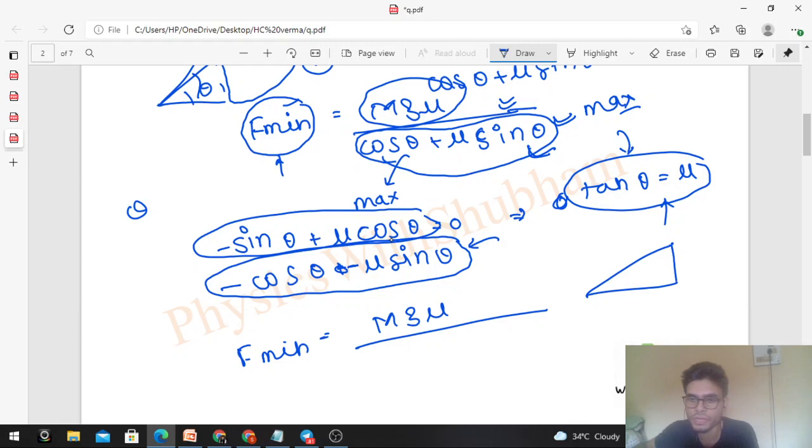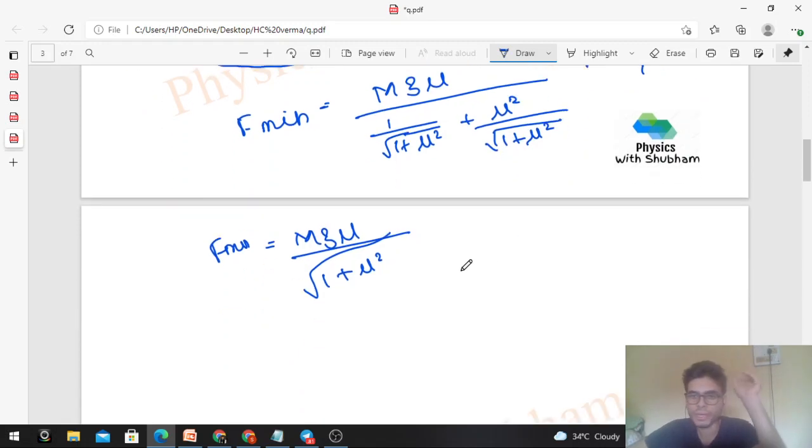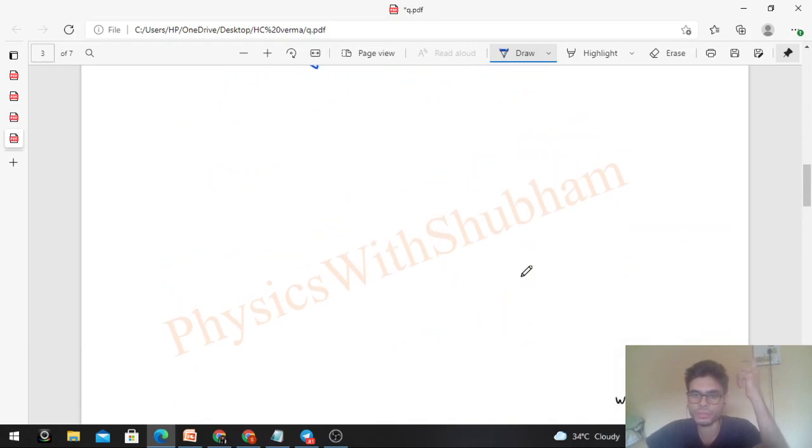So your θ is in terms of μ. Because we know the value of tan θ, which is μ upon 1, the hypotenuse is √(1 + μ²). So cos θ will be 1/√(1 + μ²) and sin θ is μ/√(1 + μ²). You can solve it. The value comes out to be mg μ/√(1 + μ²). So this is the answer where you have to apply F minimum, and the direction is tan inverse μ.